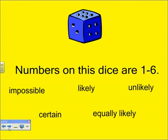Now let's take a moment and look at this dice. We know that a dice has numbers one through six on it. So let's talk a little bit about this dice and use our vocabulary to help us with the probability of the numbers one through six. If we roll this dice, it is equally likely that we would roll a two or a three, because there is one two and one three on this dice. So the chances of rolling a two or a three are equally likely.